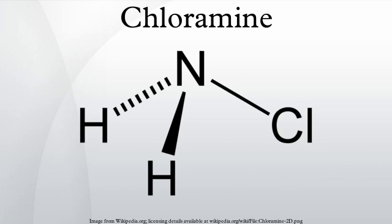At low pH values, nitrogen trichloride dominates; between pH 3 to 5, dichloramine dominates. These equilibria are disturbed by the irreversible decomposition of both compounds: NHCl2 + NCl3 + 2H2O → N2 + 3HCl + 2HOCl.